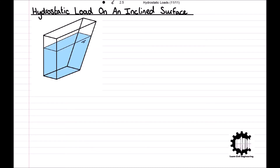Consider the tank shown in the diagram here, which is filled to a depth of h0 with liquid of uniform density rho. The tank has a uniform width of w and is open, and the liquid's free surface is exposed to the atmosphere. One of the end walls of the tank is inclined at an angle of theta to the horizontal, as shown.